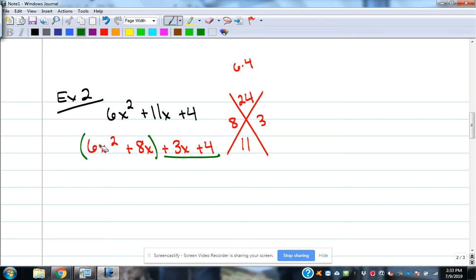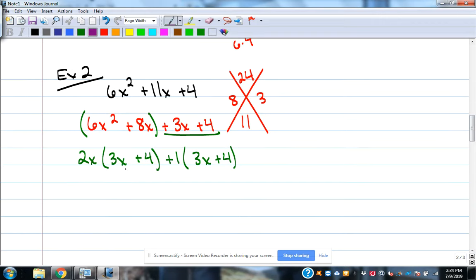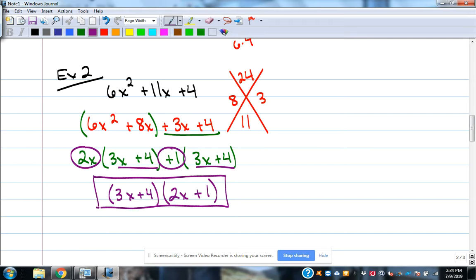We look for a greatest common factor of the first two. 6x squared and 8x have a 2x in common, leaving 3x plus 4. 3x plus 4 have a 1 in common because it's a positive 3x. It's going to be a positive 1. That would leave us 3x plus 4 in the parentheses. And the final factored form, you've got the matching parentheses. 3x plus 4 is the first factor. The second factor is the stuff in front of those, 2x plus 1. And there's the factored form for that trinomial.